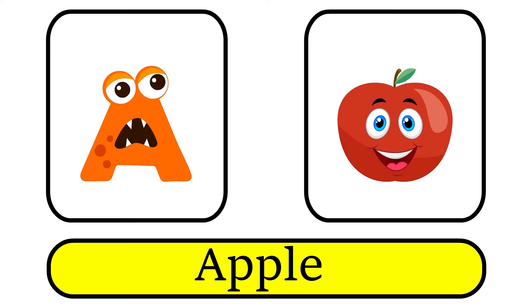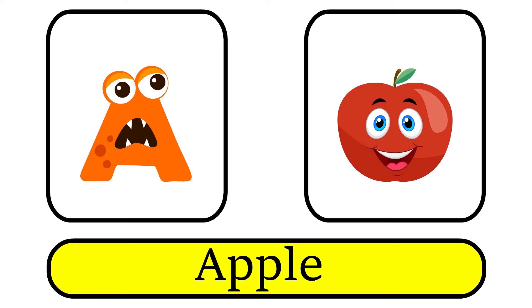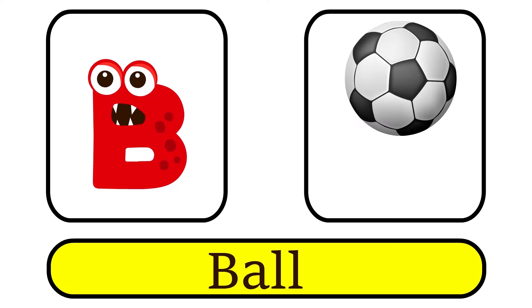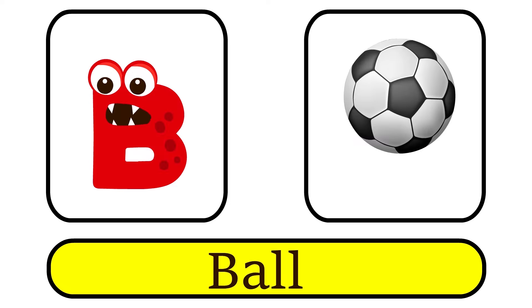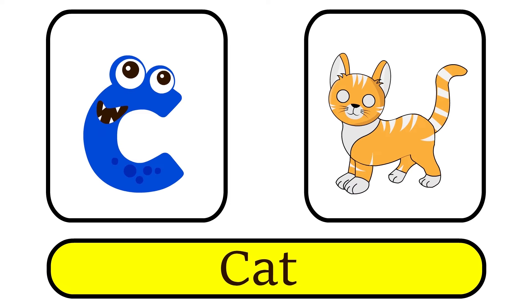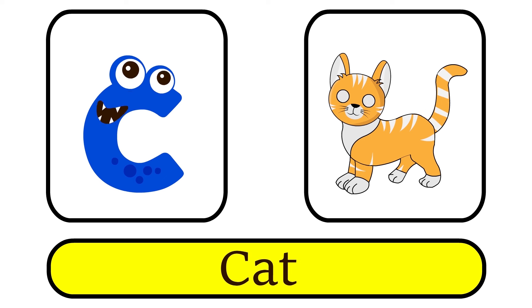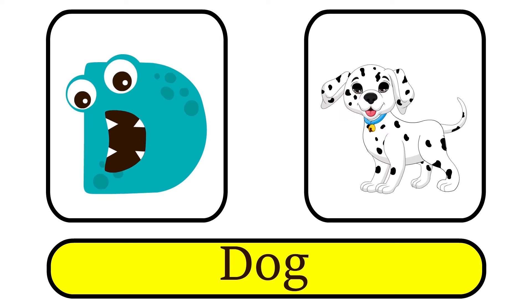A is for Apple. A, A. B is for Ball. B, B. C is for Cat. K, K. D is for Dog. D, D.